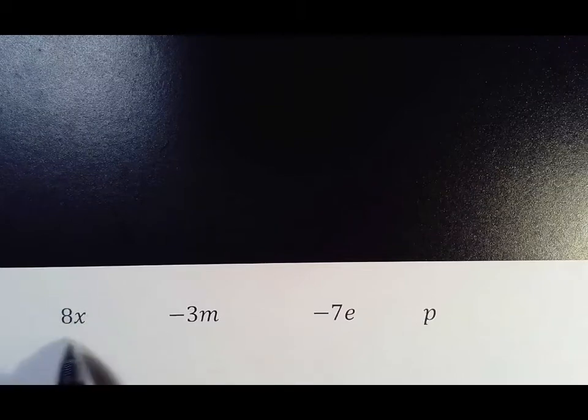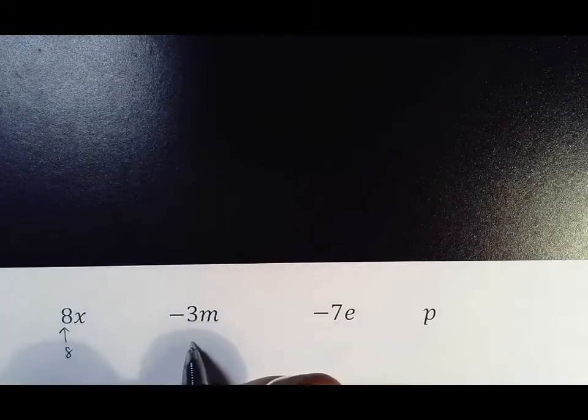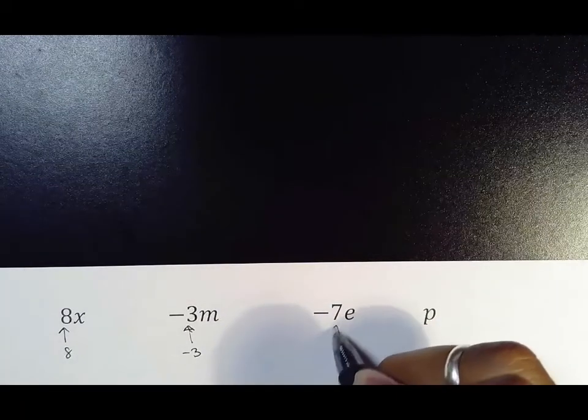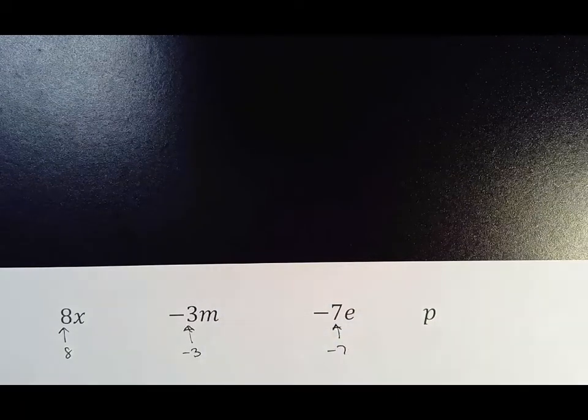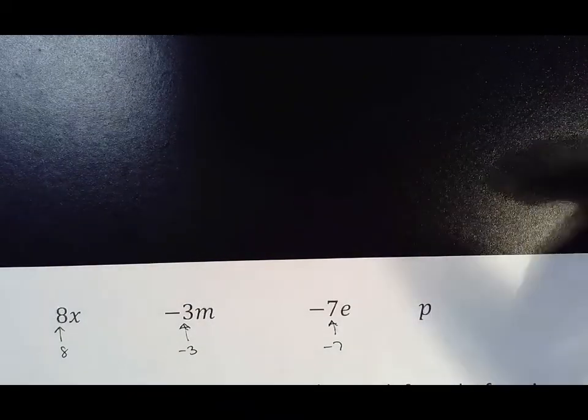In this term—because that's called a term—your coefficient is 8. In this term, your coefficient is not 3, it is negative 3, because you've got to respect the sign attached to it. In this term, your coefficient is negative 7. This term is kind of tricky—you can't see a number, but a number is there.